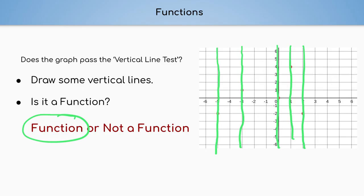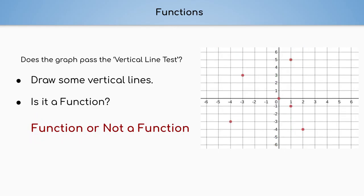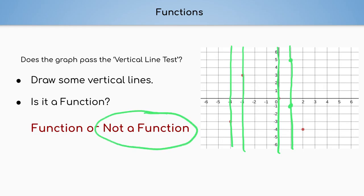Is this graph a function? Let's use our vertical line test. Here it goes through exactly one point; here it goes through exactly one point — so right now we're good. Here it goes through exactly one point. But when I draw a vertical line right here, we can see it went through a point here and a point here. So when we drew our vertical line, it went through more than one point. When a vertical line goes through more than one point, it is not a function.